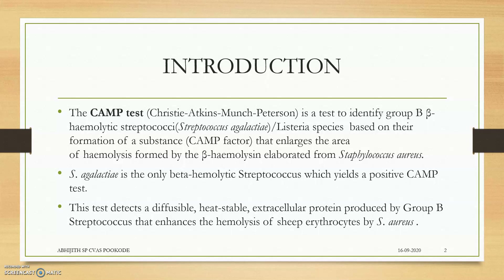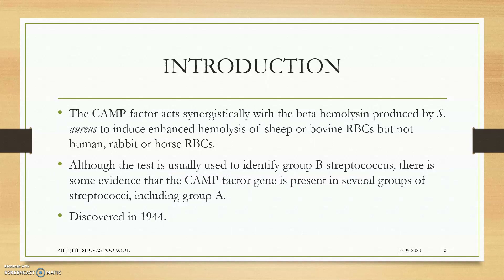This test detects a diffusible, heat-stable extracellular protein — a hemolysin produced by group B Streptococcus — that enhances the hemolysis of sheep erythrocytes. Staphylococcus aureus produces a hemolysin that breaks down RBCs on sheep blood agar. When Streptococcus agalactiae is streaked nearby, it produces the CAMP factor, which acts synergistically with the beta-hemolysin of Staph aureus to enhance hemolysis.